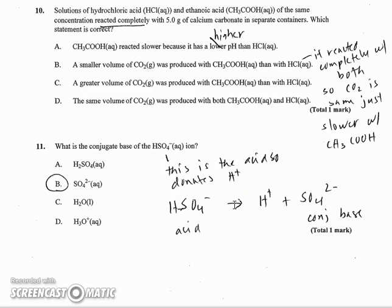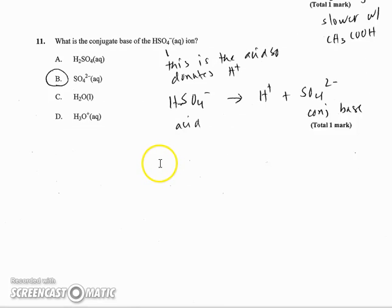Number 10, solutions of hydrochloric and ethanoic acid, the same concentration, reacted completely with five grams of calcium carbonate in separate containers. So they both reacted completely. And A says the CH3COOH reacted slower because it has a lower pH than HCl. That's not true. It has a higher pH. It's the weaker acid. A smaller volume of CO2 was produced with CH3COOH than with HCl. That's not true either. If it reacted completely with both, the CO2 should be the same. It's just going to be much slower with the CH3COOH. And then a greater volume of CO2 was produced. That's not true either. It's going to be the same volume either way because they both completely reacted. The five grams was my limited reactant. So the correct choice would be D. The same volume of CO2 would be produced. What would be different would be the reaction rate with the strong and weak acid, which is one way to tell them apart.